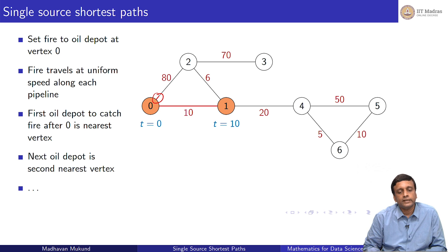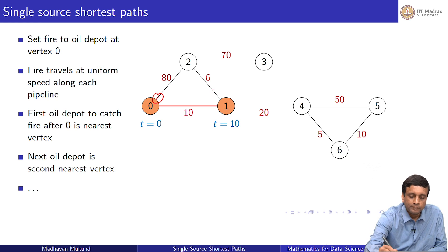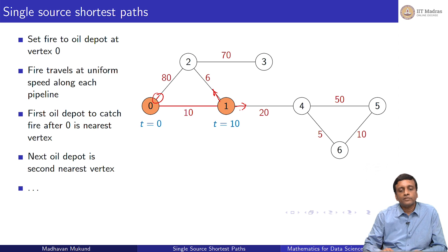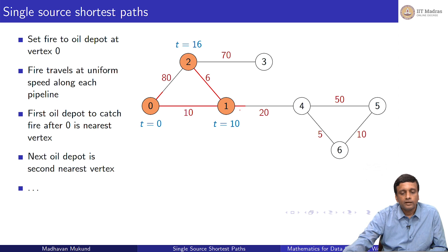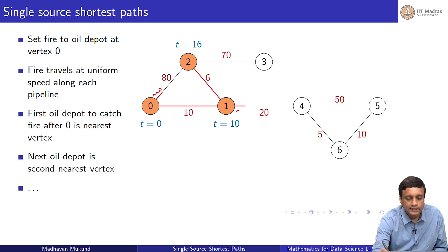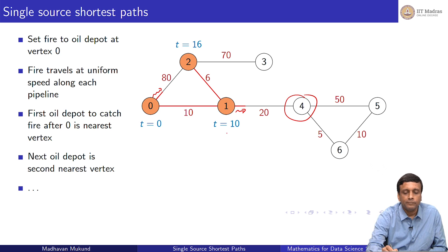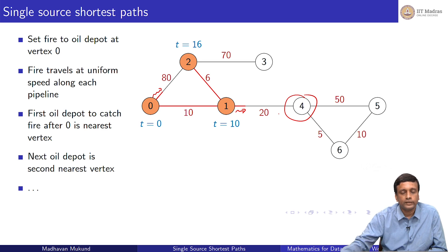In 10 units of time, the fire has also traveled a short distance along the edge from 0 to 2, but it is not yet anywhere near 2. Now that vertex 1 is burnt, fire starts going in two new directions. After 6 units of time from vertex 1, vertex 2 is going to catch fire. Meanwhile, fire has also started traveling towards 4. So at t equals 30, vertex 4 catches fire.